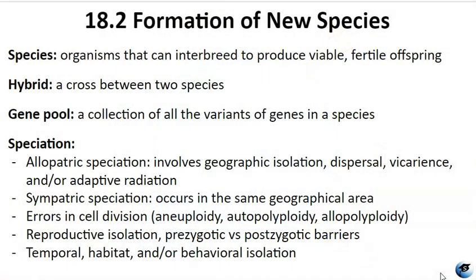Although all life on Earth shares genetic similarities, only certain organisms engage in sexual reproduction and produce offspring capable of successful reproduction. These organisms are referred to as members of the same biological species. A species is defined as a group of individual organisms that can interbreed and produce fertile, viable offspring. In nature, when individuals from different species cannot produce fertile offspring through mating, they are considered different species. Members of the same species share both external and internal characteristics that develop from their DNA. The more closely related two organisms are, the more DNA they have in common.